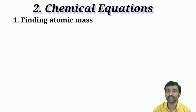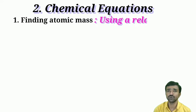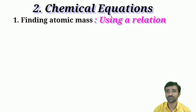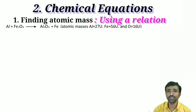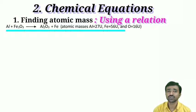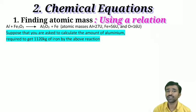The first type is finding the atomic mass of the substance produced or used in the reaction. You have to find the relation to get the required quantity according to the atomic mass. For example, take this problem: aluminum reacts with iron oxide to produce aluminum oxide and iron. A reaction is given with atomic masses, and you are asked to calculate the amount of aluminum required to get 1120 kg of iron.